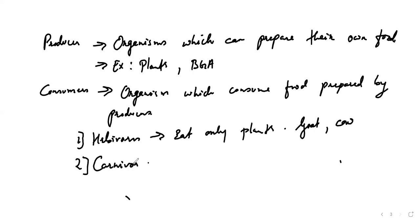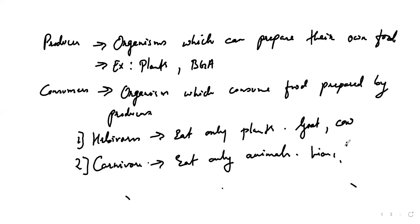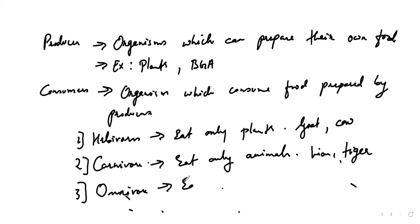Carnivore means they will eat only animals as food, like lion and tiger. And the last one is omnivore — omnivore means a combination of both, so they will eat both plants and animals.